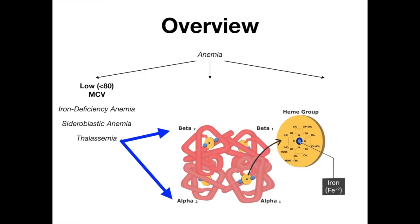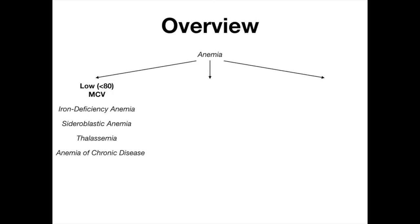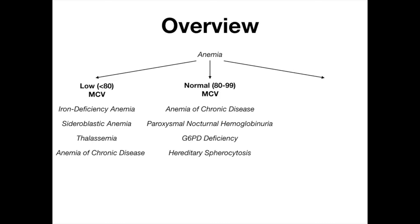Also included in the low MCV group is anemia of chronic disease, though it can actually be either low or normal MCV. Anything with an MCV from 80 to 99 is considered normal. The other diseases in the normal MCV section include paroxysmal nocturnal hemoglobinuria, G6PD deficiency, and hereditary spherocytosis. High MCV diseases — MCV of 100 or higher — are classically B12 and folate deficiency. That's the overview; I'll go through each individually with high-yield points and mnemonics.